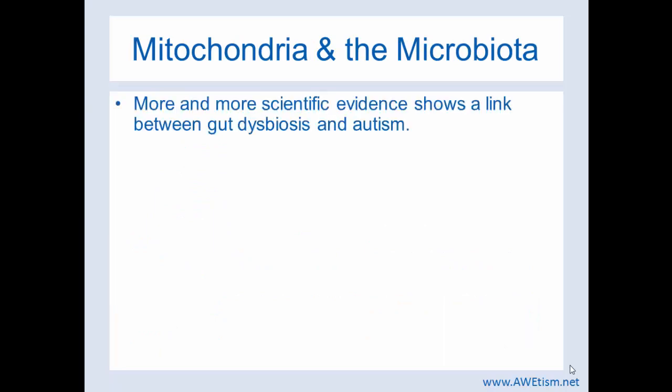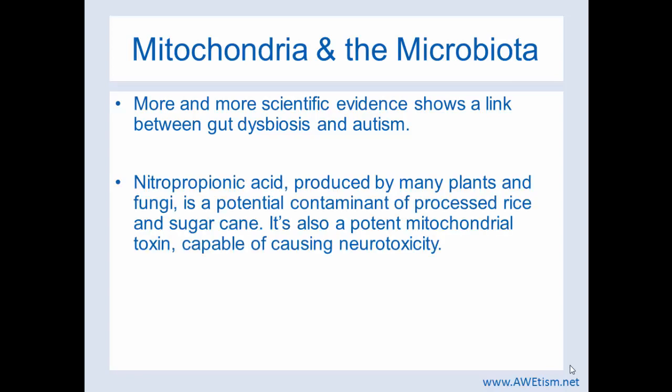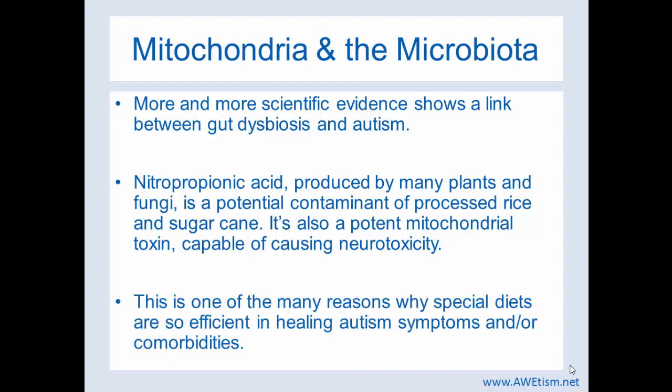Mitochondria and the microbiota — more and more scientific evidence shows a link between gut dysbiosis and autism. Nitropropionic acid, which is produced by many plants and fungi, is a potential contaminant of processed rice and sugarcane, which appear in a lot of processed and prepared foods. Unfortunately, it's a potent mitochondrial toxin capable of causing neurotoxicity. This is one of the many reasons why special diets are so efficient in healing autism symptoms and/or comorbidities — special diets can rebalance the gut microbiota, and eating pure whole foods avoids these contaminants. Special diets are super important in healing autism.